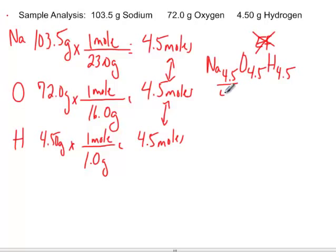What we need to do is divide by the smallest. This works out nicely because they're all the same. So we divide by 4.5 across the board, and they each cancel out. This becomes a one, this becomes a one, this becomes a one.